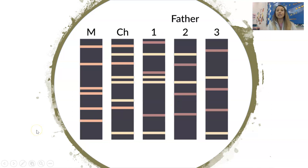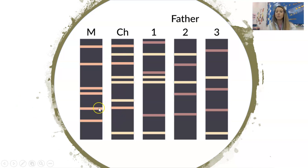Pause here and see if you can figure out who the father of this child is. Remember, a child is a combination of genes from the mother and the father. The orangey-peach genes the child has were given by the mother. Can you figure out which father gave the more yellow-colored genes? Pause and circle who you think the father is.